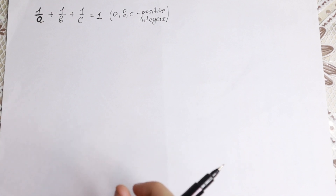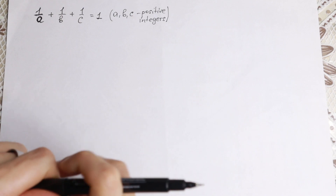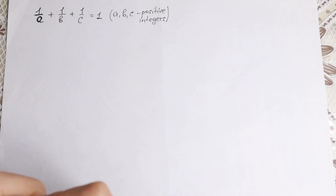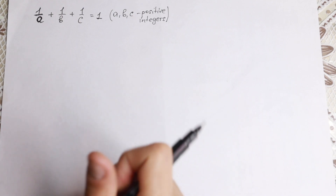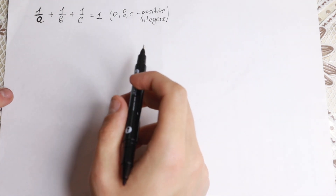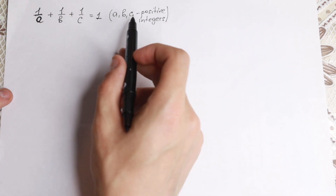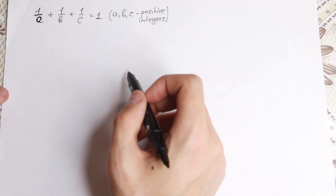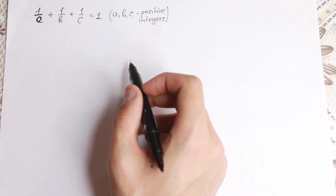Hello everyone! Welcome back to Higher Mathematics — happy to see you here! Really interesting problem today. We have 1/a + 1/b + 1/c = 1, and we need to find all solutions when a, b, c are positive integers. How can we find it?